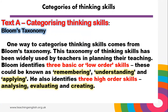Bloom identifies three basic or low-order skills: remembering, understanding, and applying — the three levels of low-order thinking, the basic level. He also identifies three high-order skills: analyzing, evaluating, and creating. So Bloom classifies thinking into six levels — three of them are low-order, and the other three are high-order skills.